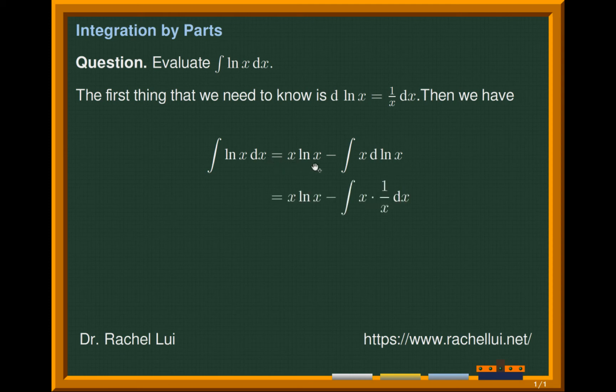So we still have x log x minus integrate x. We know that d log x is actually 1 over x dx. So x multiplied by 1 over x end up having a 1. And when we integrate 1, then we will have x. So the answer is x log x minus x plus a constant c due to the fact that it is an indefinite integral.